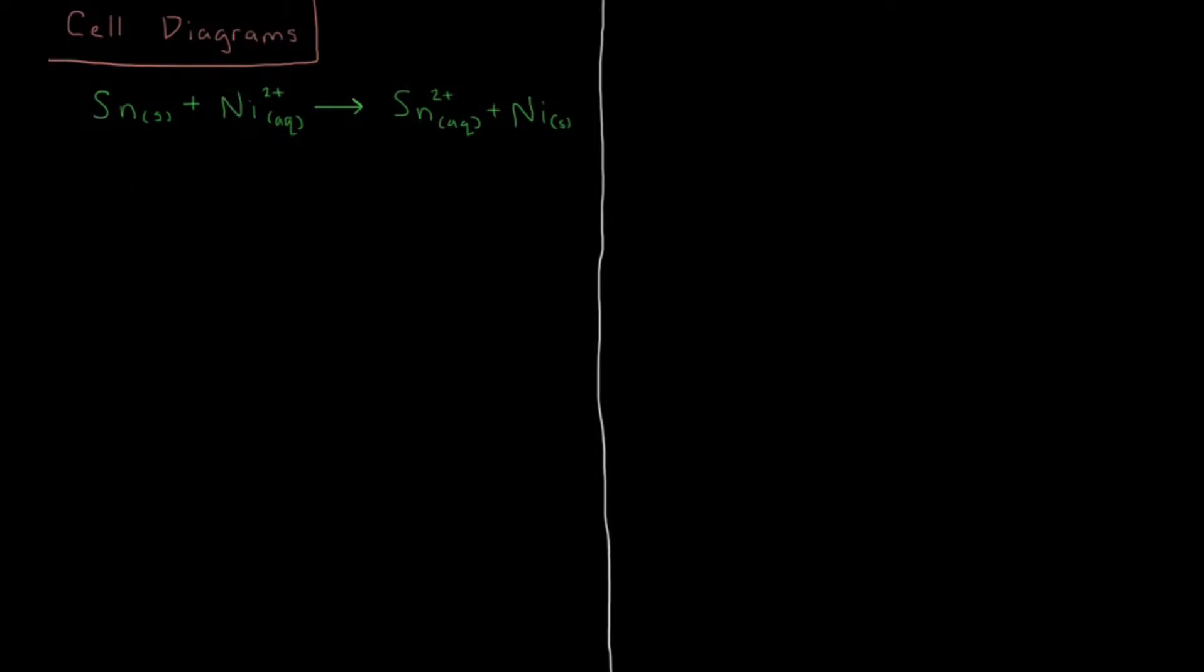So let's write the two half cells of these reactions. We have on the left our oxidation of tin. So we have tin solid going to aqueous tin plus two electrons in terms of the net ionic equation. And on the other side, I'm going to write our reduction, which is aqueous nickel ions plus two electrons going to nickel solid. Both of these being reversible reactions.